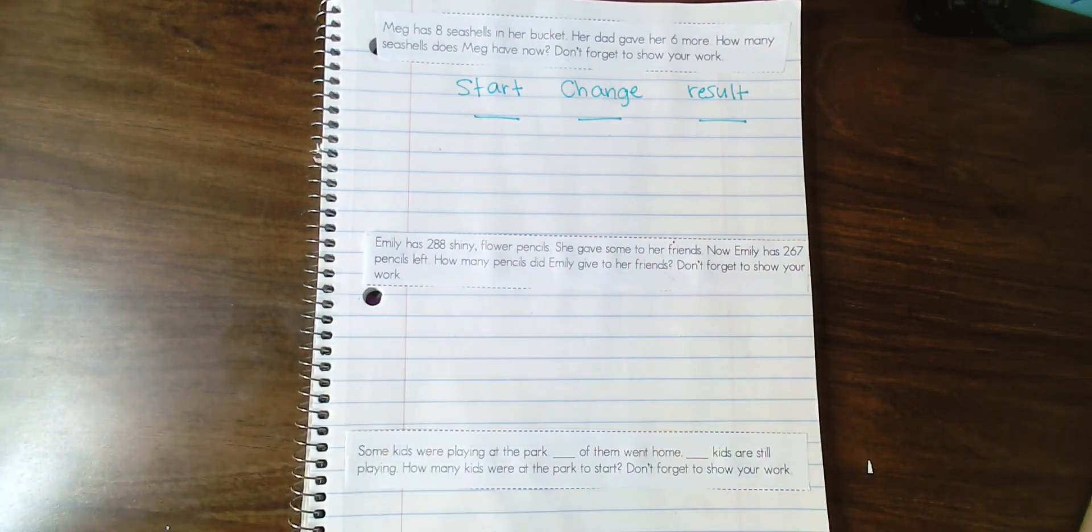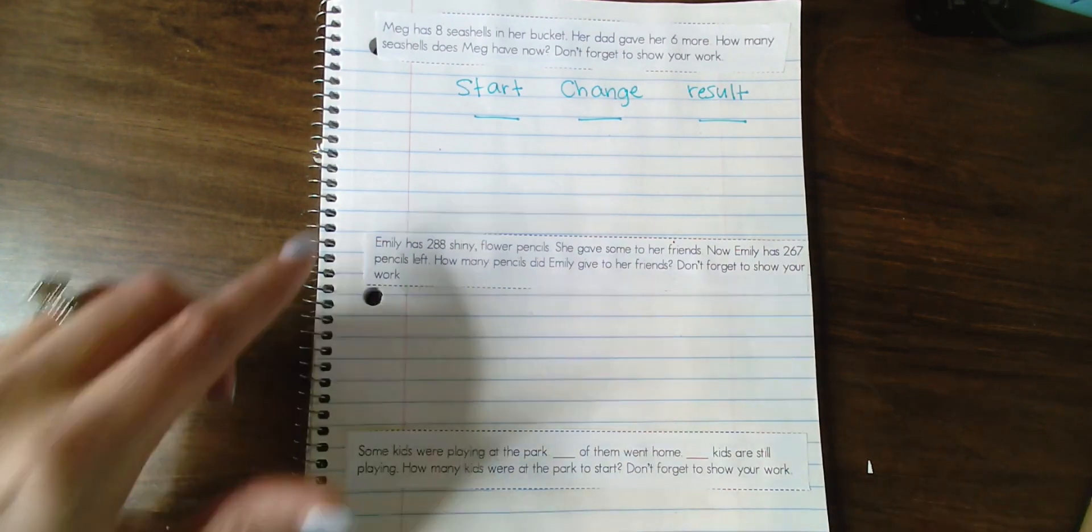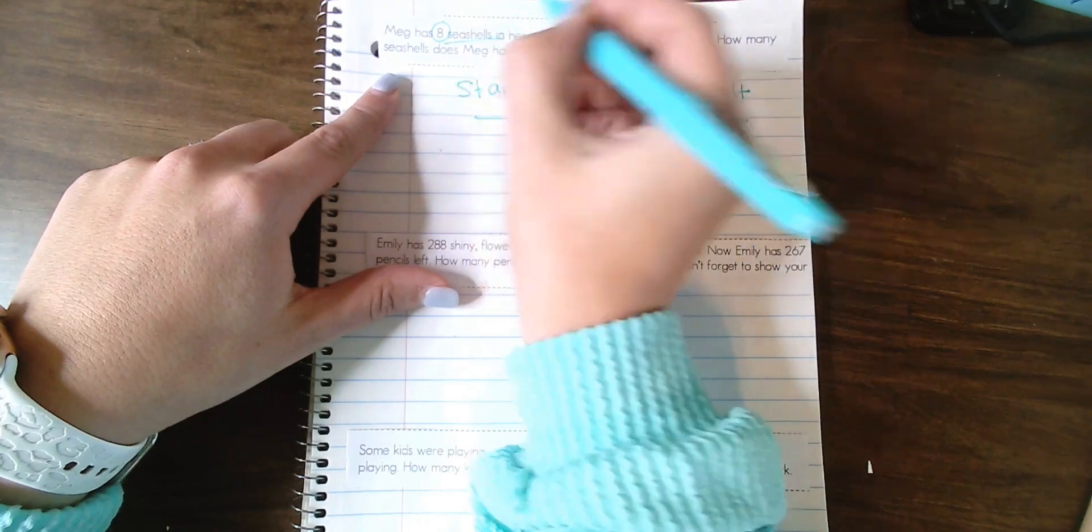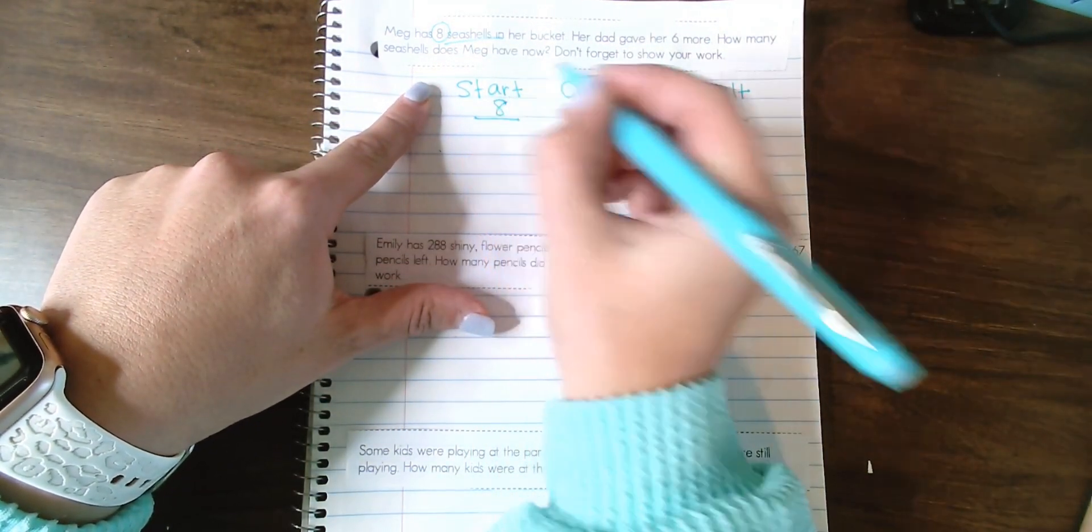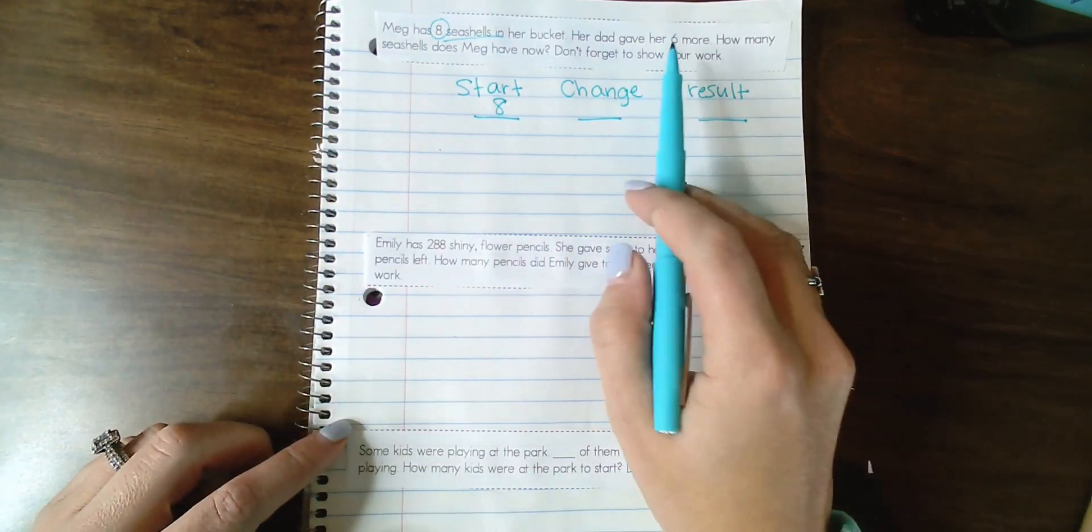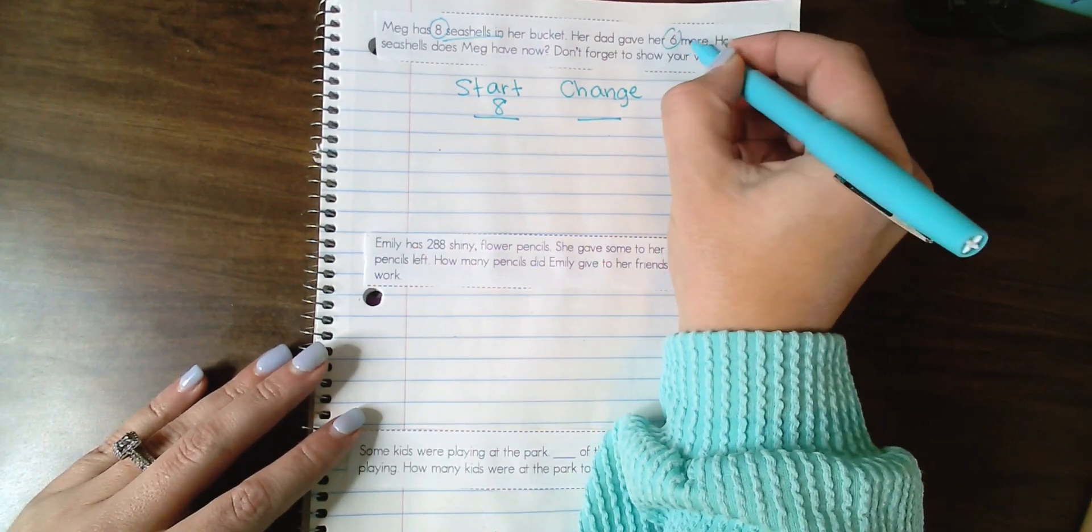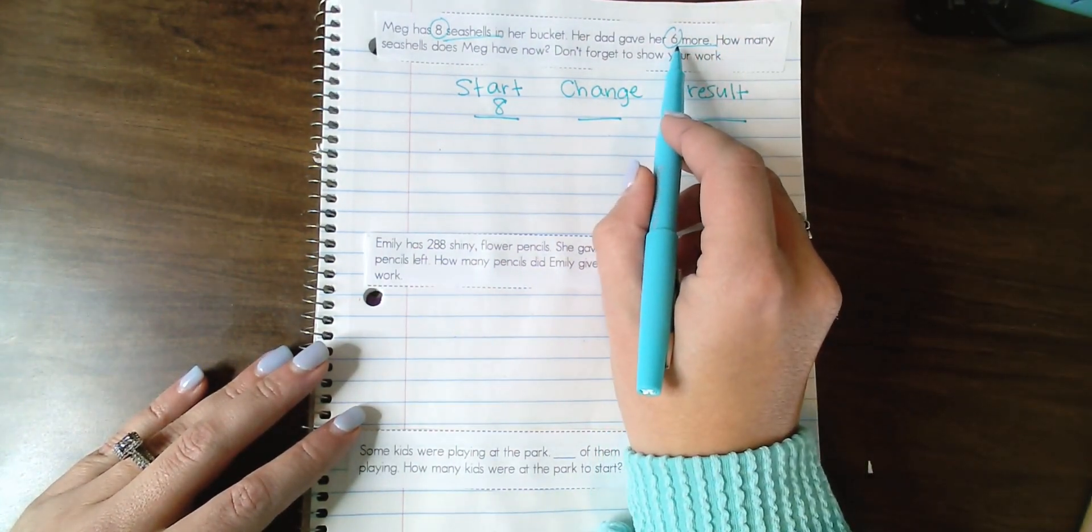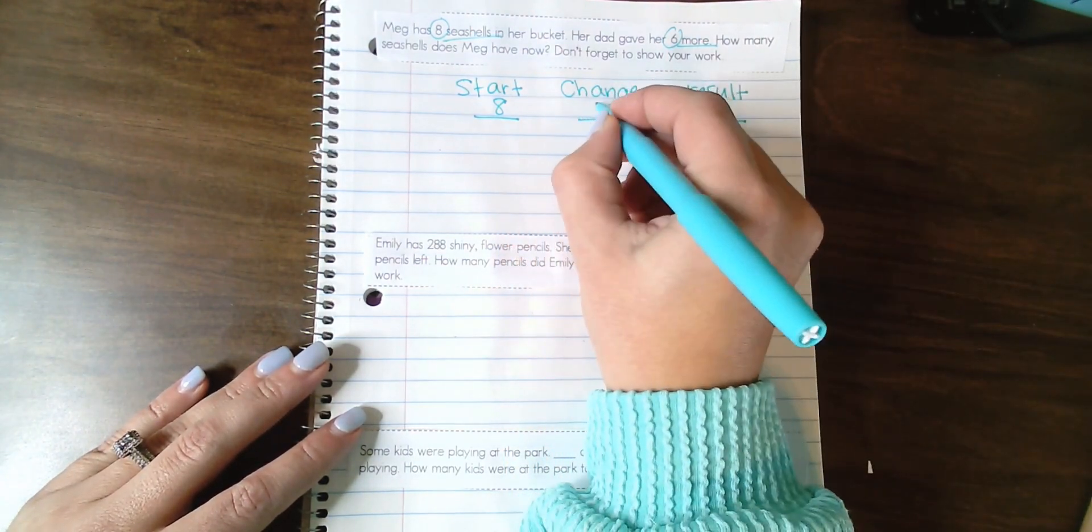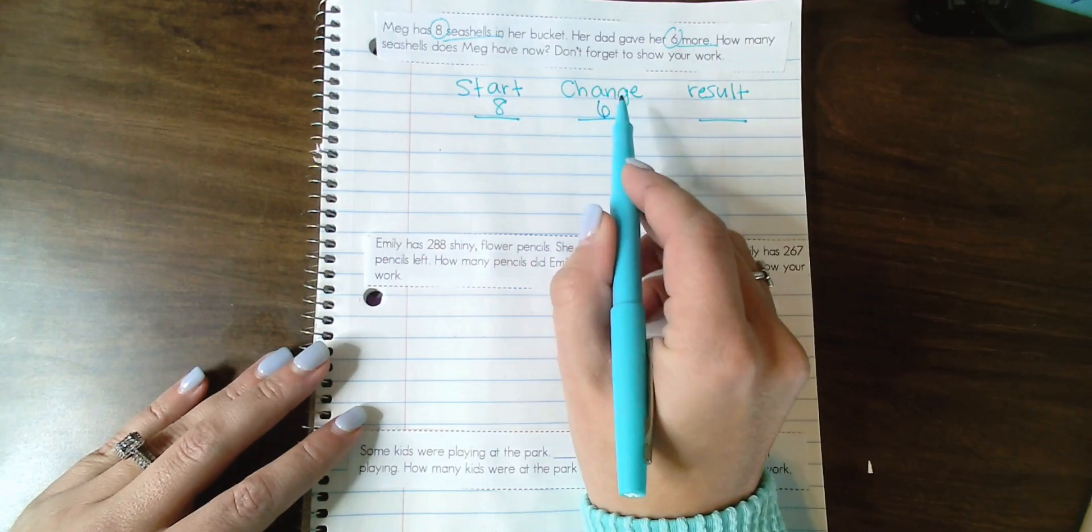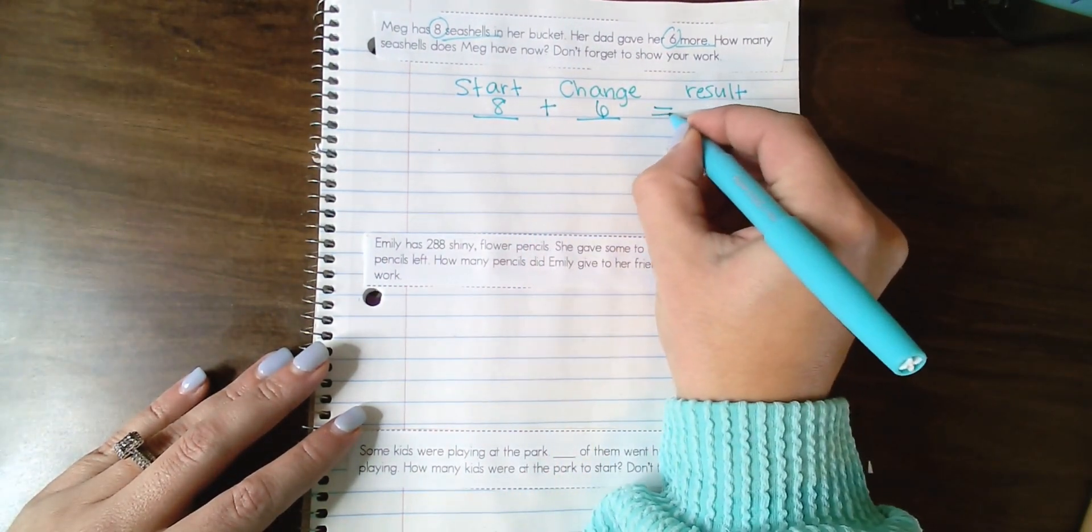We're going to go back and we're going to talk about what is happening in the problem. So I'm going to say, do we know how many seashells Meg starts with in her bucket? Do we know how many she has at the beginning? Yes, we know that she has eight seashells. That is our starting number. Then we know that her dad gave her six more. I'm going to ask them, is there a change happening to the amount of seashells in her bucket? Yes, there is. Her dad is giving her six more. Because dad is giving her six more, this is making this an addition problem. So I'm going to write six for my change amount. And then we're going to add our plus sign and our equal sign.